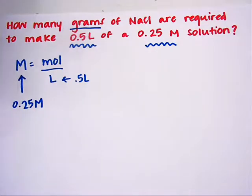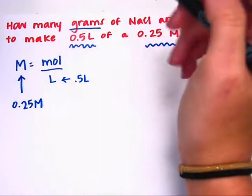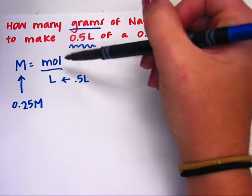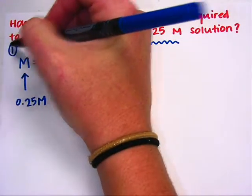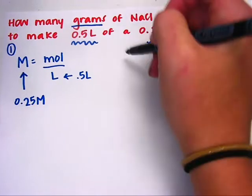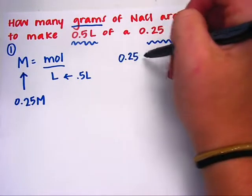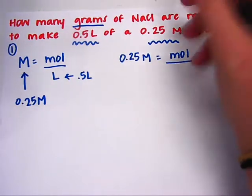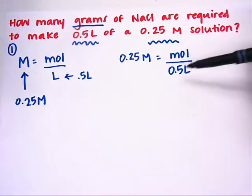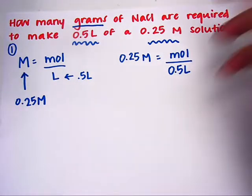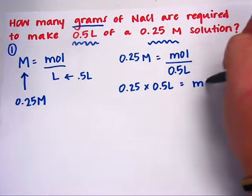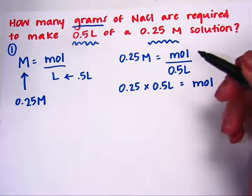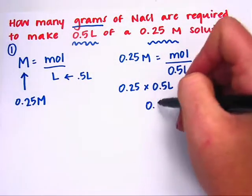I'm trying to find the number of moles, but that's not actually what the problem asked for — it asked for grams. So if I solve it this way, I'll solve for moles and then convert moles into grams. When you do this problem, 0.25 molar equals moles divided by liters. All this is is an algebra problem — multiply both sides by 0.5. So 0.25 times 0.5 liters equals the number of moles, which gives you 0.125 moles.